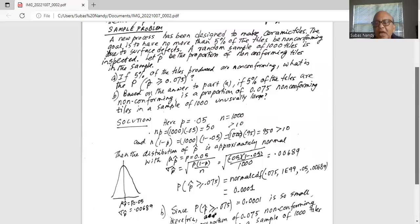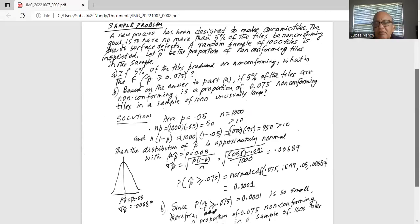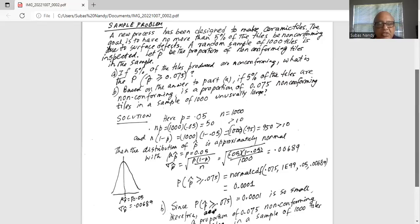We can do this in the calculator in one shot. Press the second button and then x square to invoke the square root. Inside the square root, multiply 0.05 times in parenthesis 1 minus 0.05, close the right parenthesis, then divide by 1000 and hit enter. We will get the same result, 0.00689, which is the standard deviation of the sampling distribution, also called standard error.